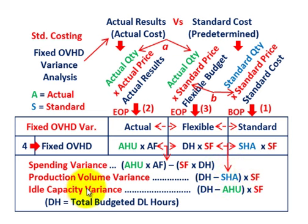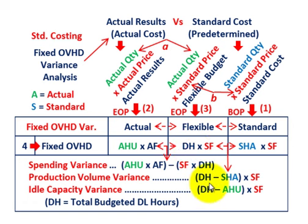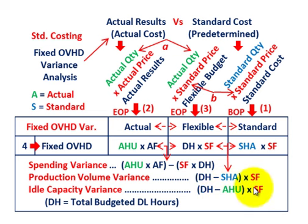We have one other variance — the idle capacity variance. That's taking those total denominator hours established under the flexible budget and comparing them to the actual hours used based on our actual results. That difference — denominator hours versus actual hours used — times the standard fixed rate gives us the idle capacity variance.